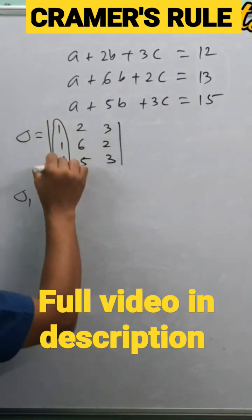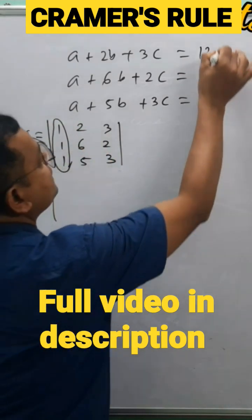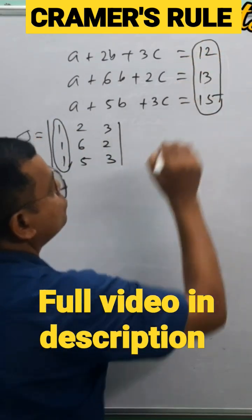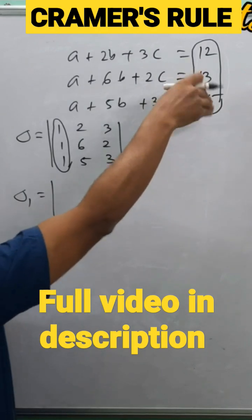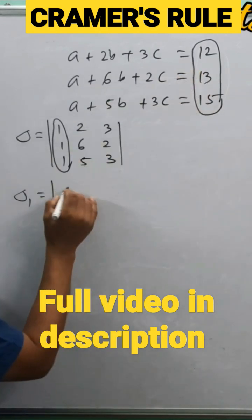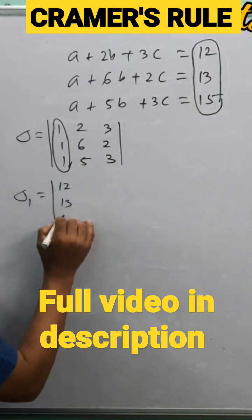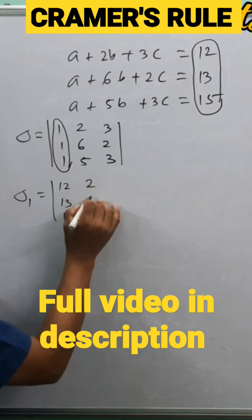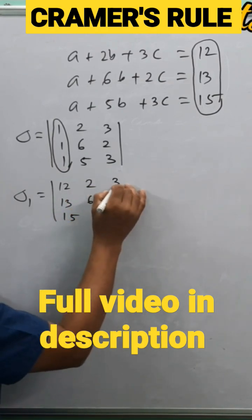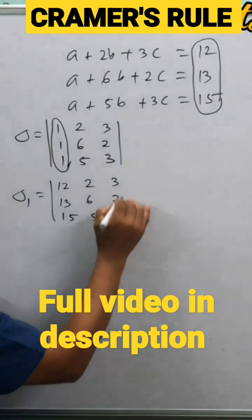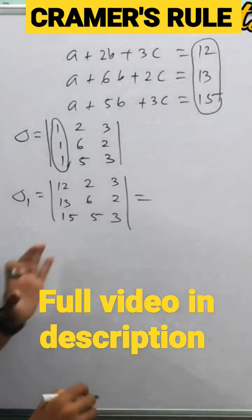Delta one - the first column of this delta will be replaced by the constant elements: 12, 13, 15. You're getting 12, 13, 15 in the first column. Second column: 2, 6, 5 as it is. Third column: 3, 2, 3. And we shall solve this to get delta one.